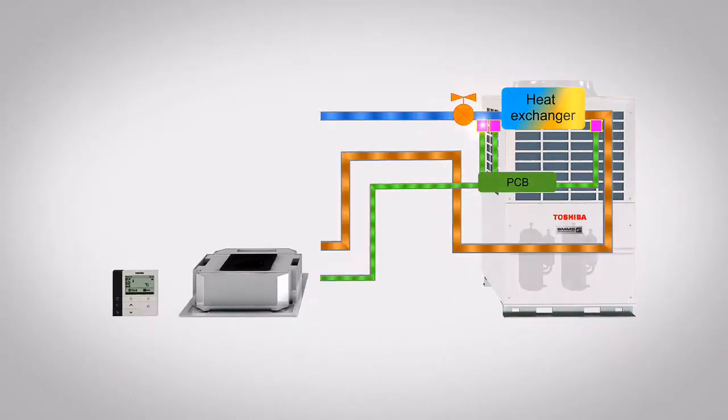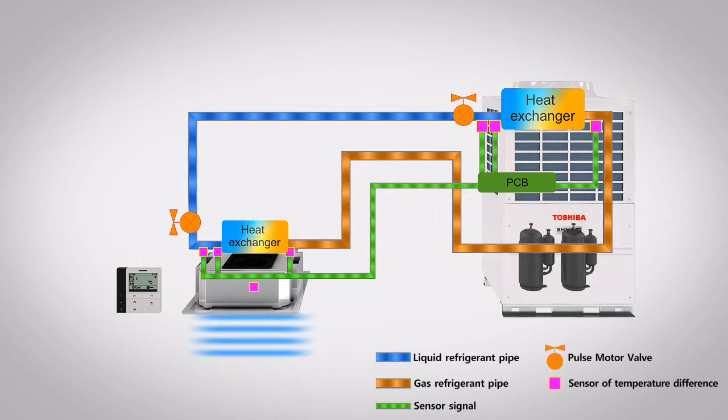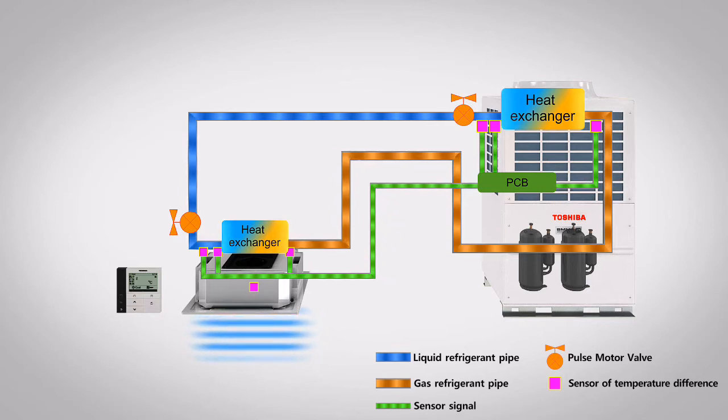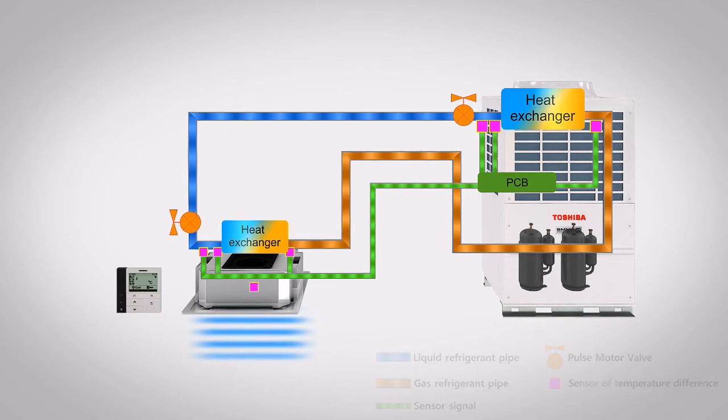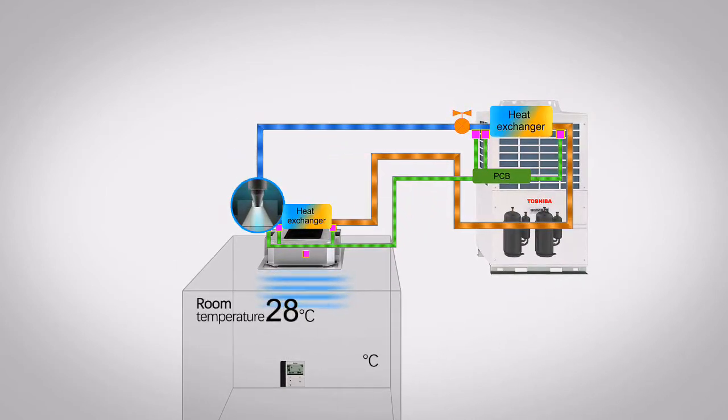The volume of refrigerant that passes through each indoor unit can be controlled precisely according to the differences between the set temperature and the room temperature. In addition, the control can actively adjust the flow of refrigerant through each indoor unit in response to operational load changes on the total system.